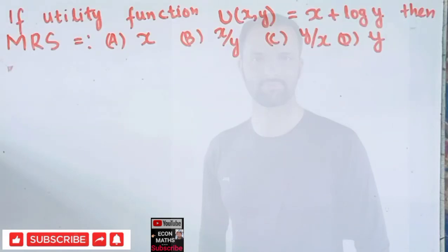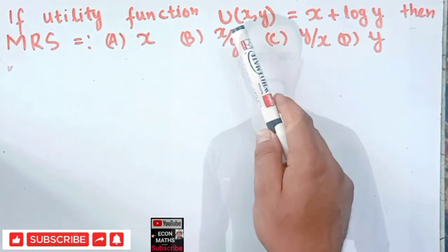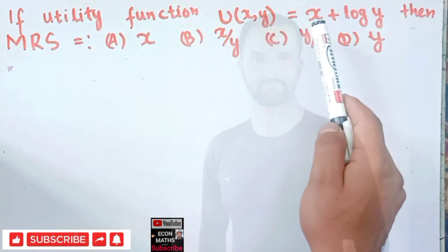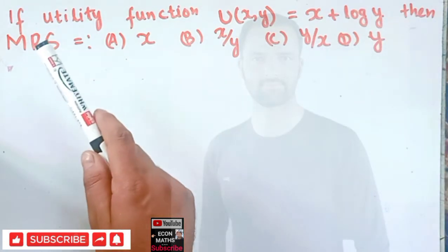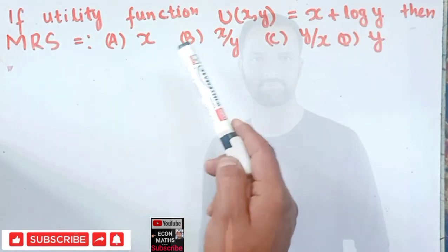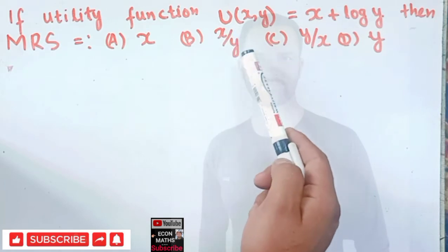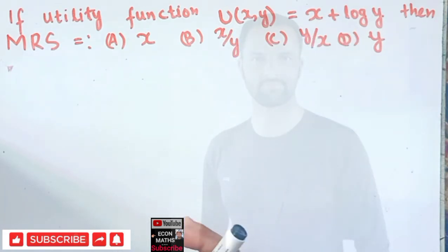In this video we will try to solve a problem on marginal rate of substitution. The question is: if the utility function u(x, y) is equal to x plus log y, then the marginal rate of substitution is equal to — the options are x, x over y, y over x, or y.